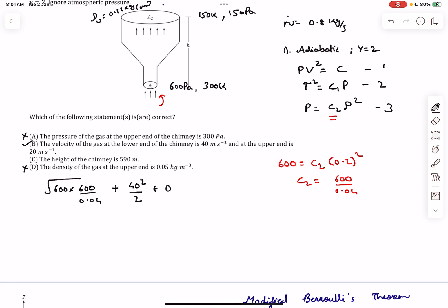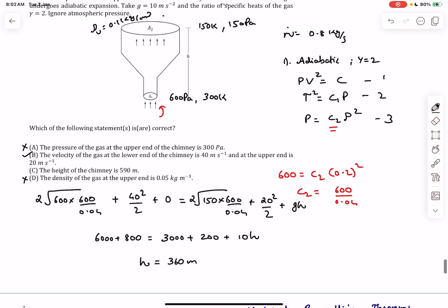The first term is √(p·C₂). The pressure at end 1 is 600 Pa times C₂, plus v²/2 where the velocity at the inlet was 40 m/s, so 40²/2. Let's assume end 1 is the zero potential energy level. This equals √(150·C₂) plus 20²/2 plus gh. After calculations the value simplifies to 360 meters.